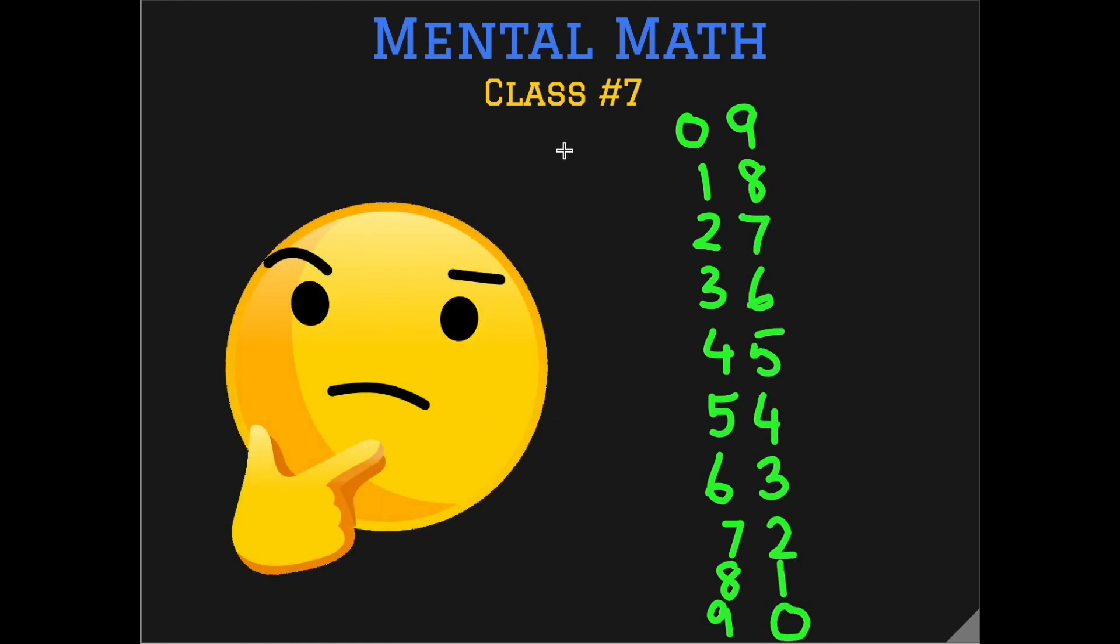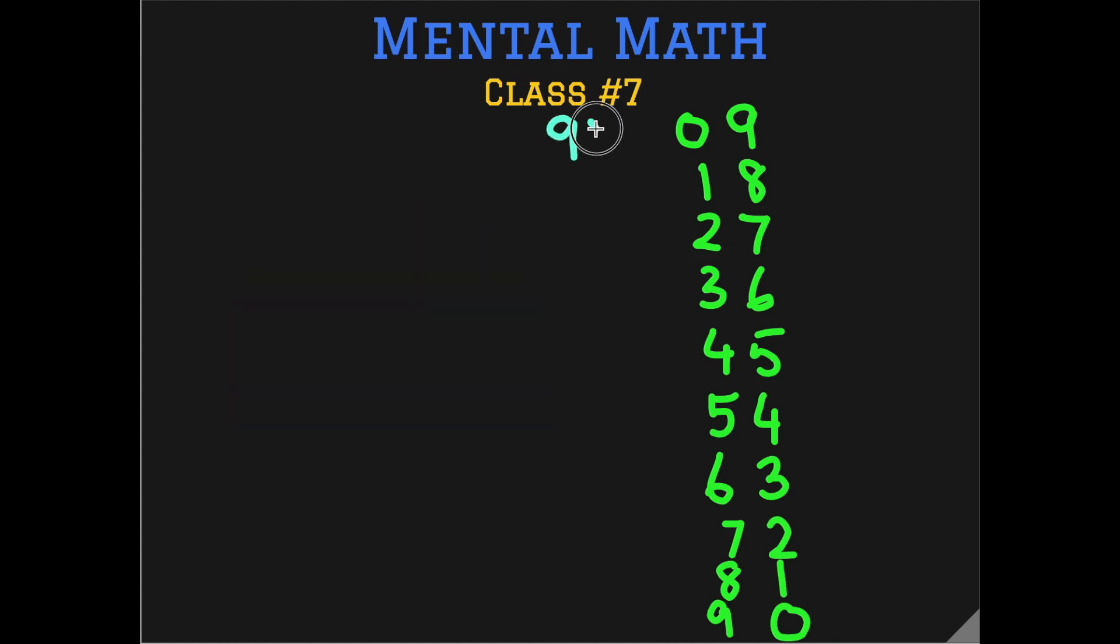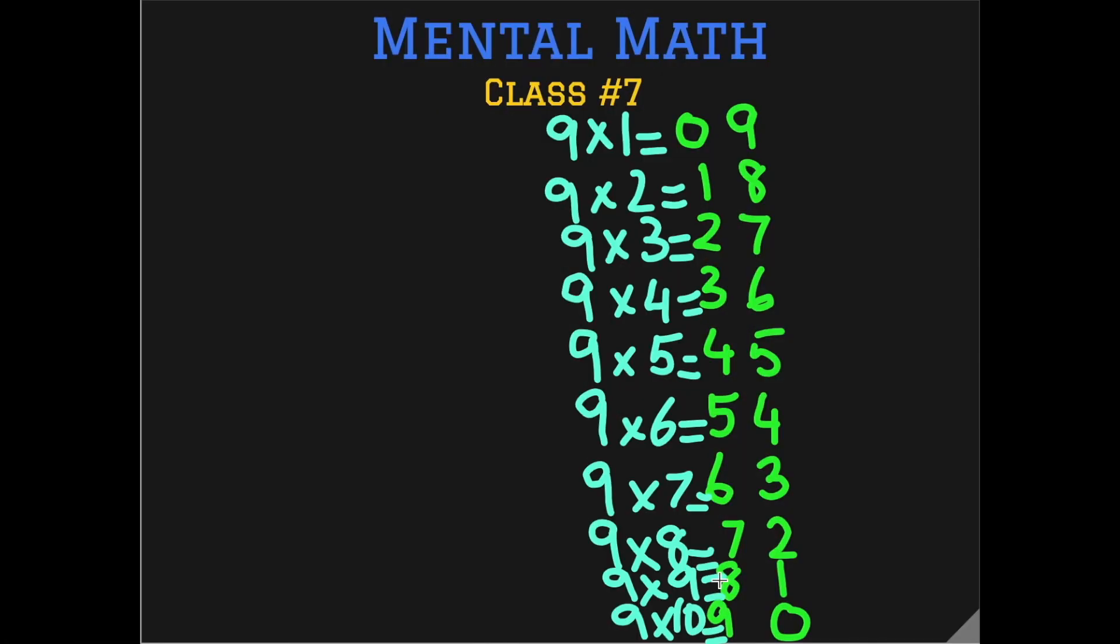Now you must be thinking that how is that possible? Look, 9 multiplied by 1 is 9, 9 times 2 is 18, 9 times 3 is 27. You can clearly see the link that this is the table of 9. So you can simply arrive at the table of 9 by writing the numbers from 0 to 9 in the 10th place and in the 1st place you just do backward counting from 9 to 0.